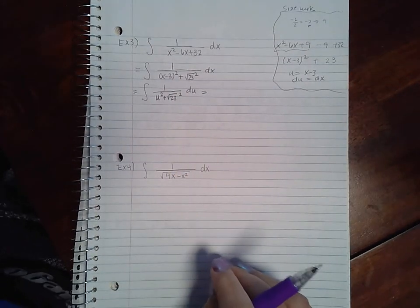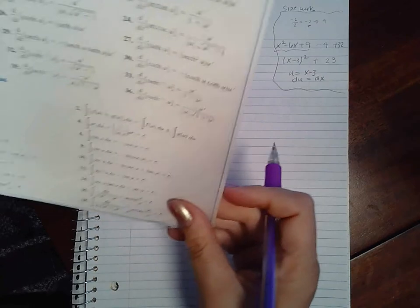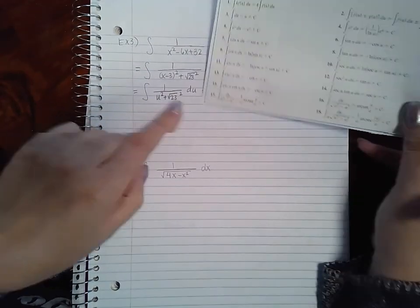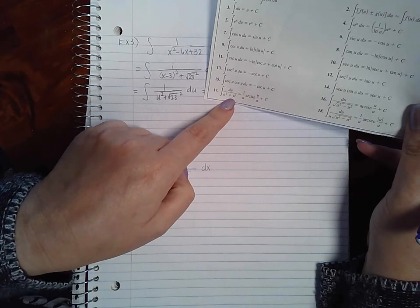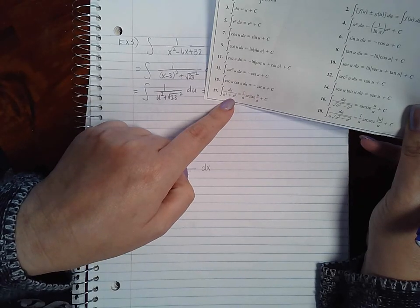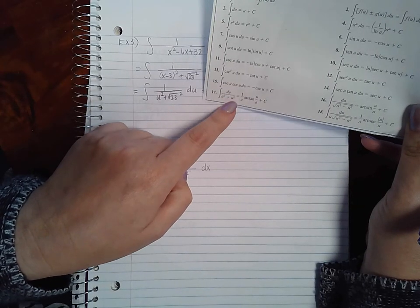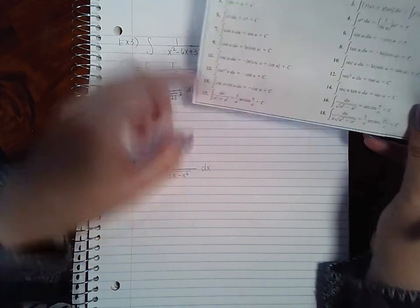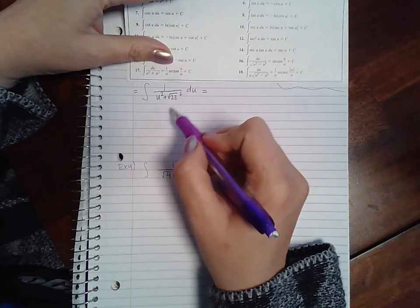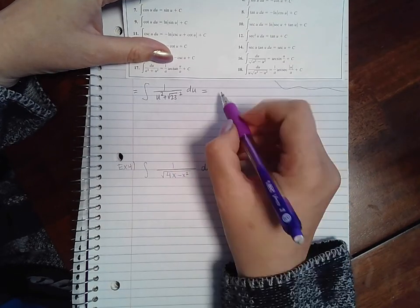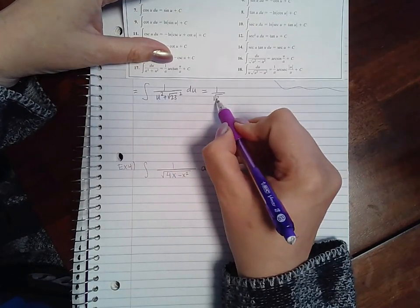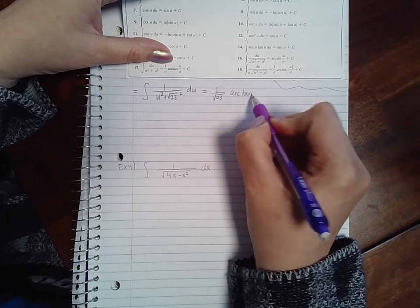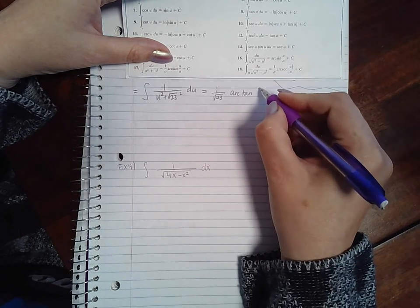Now if you look in your formulas, I have a squared plus u squared or u squared plus a squared in the denominator. Adding is commutative so either way, I get one over a, a being square root of 23, so one over the square root of 23 arc tangent of u over a plus c of course.